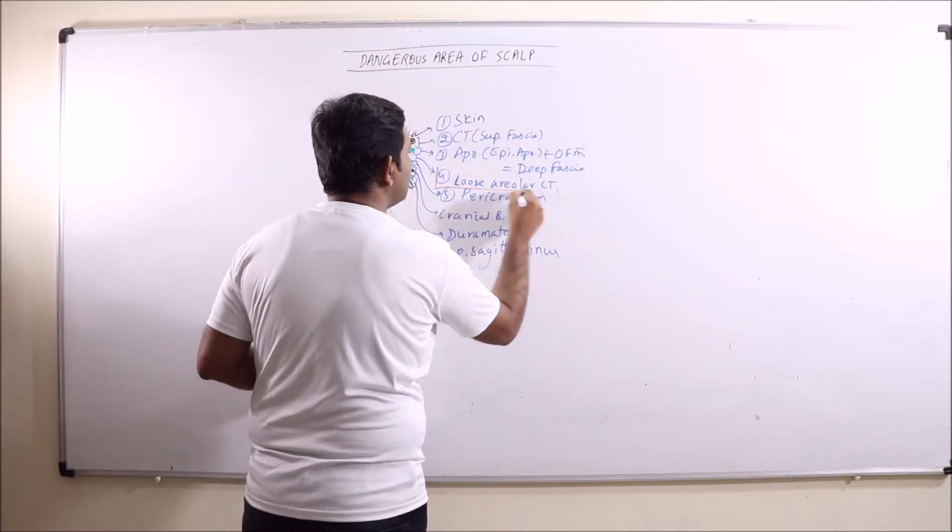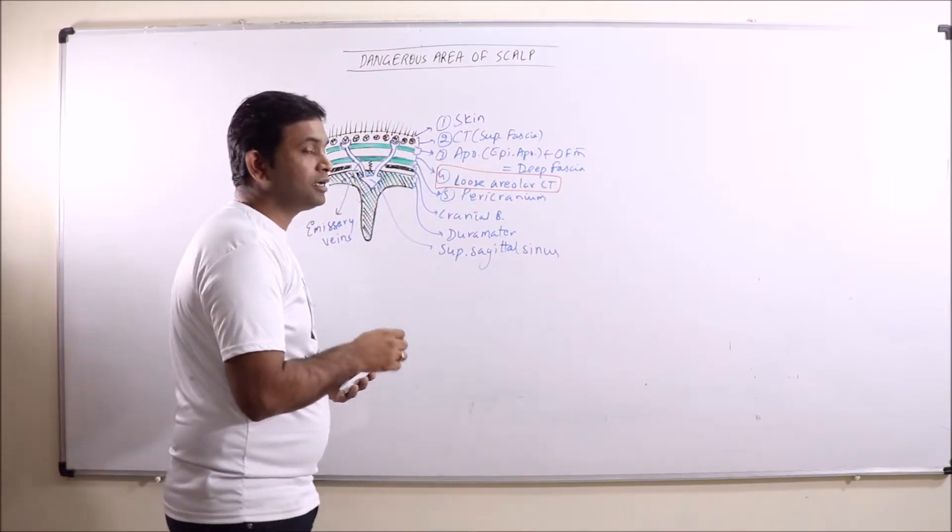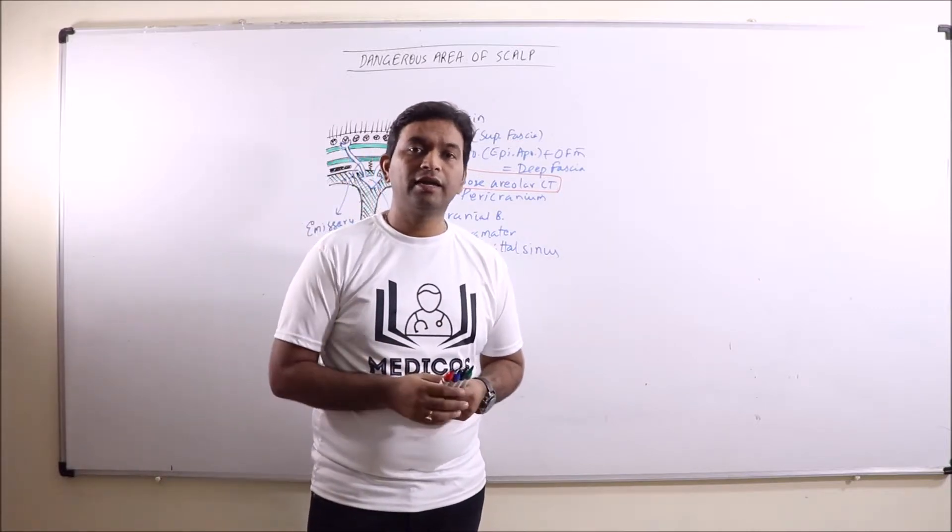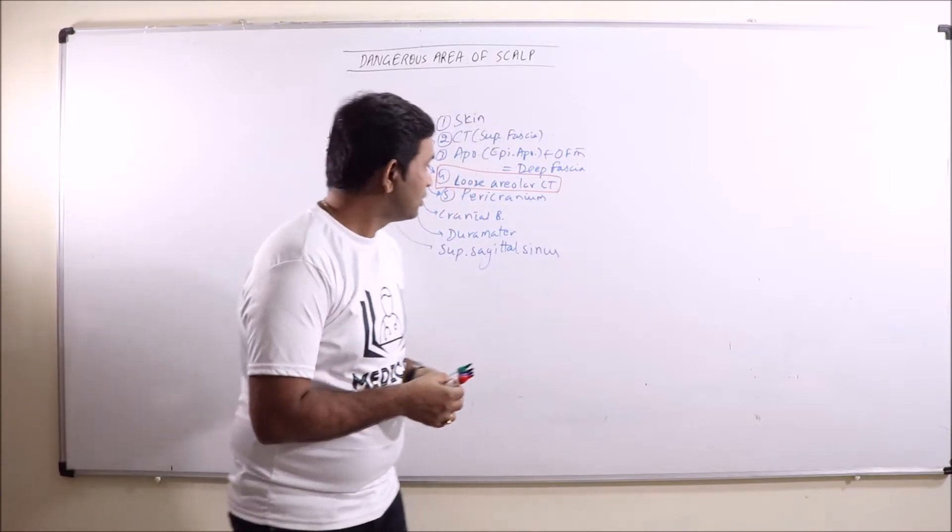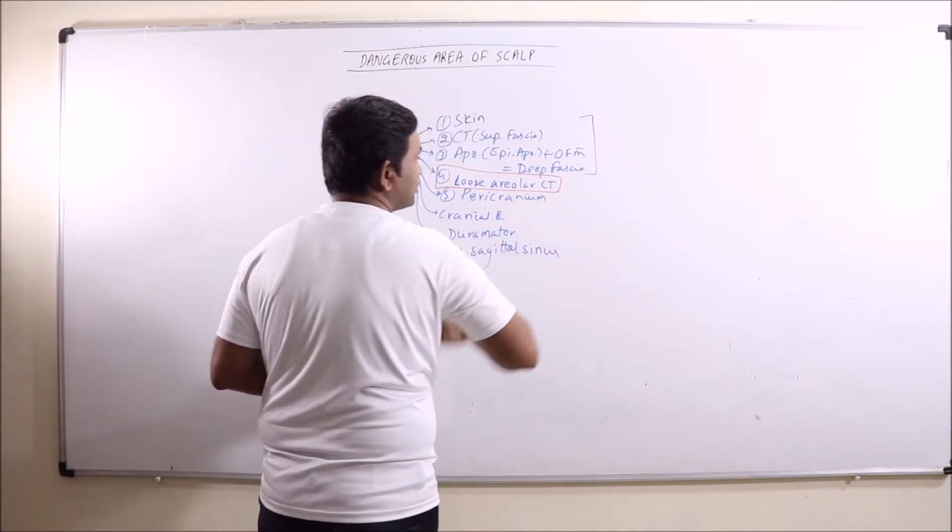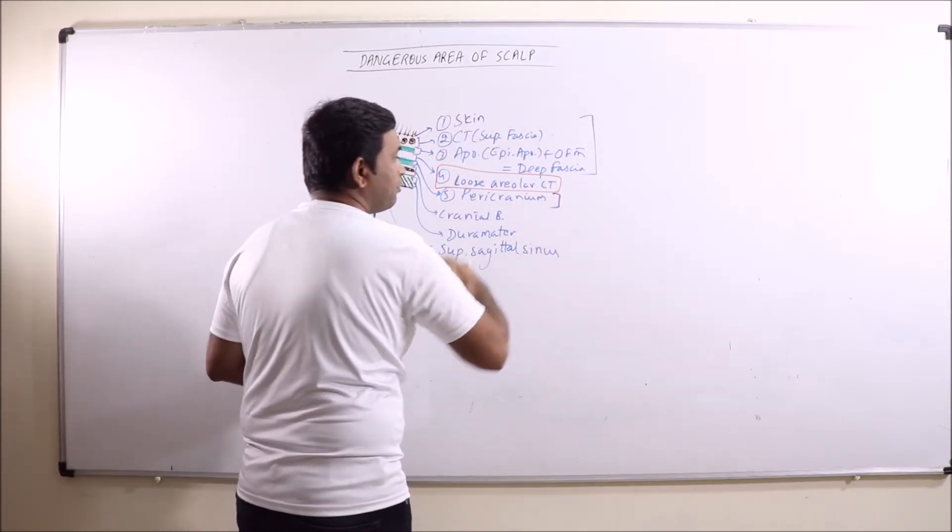So loose areolar connective tissue provides an easy access for craniofacial and neurosurgery. Now this loose areolar connective tissue also provides the plane for separation between the above three layers and the pericranium.